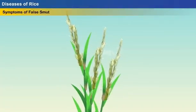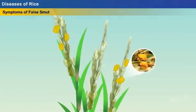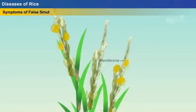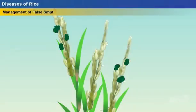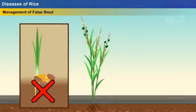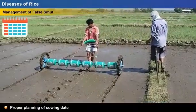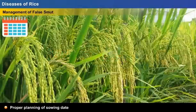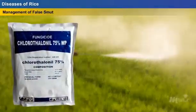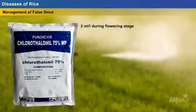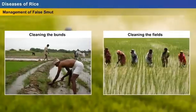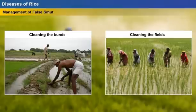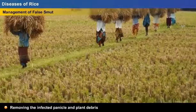Symptoms of false smut: initially, the smut ball is yellow in colour and coated by a membrane. After bursting of the membrane, the colour changes to yellowish green, then olive green, and at the end turns greenish black. False smut can be managed by avoiding the sowing of infected seeds, by proper planning of sowing date to avoid damage during the heading period, by spraying chlorothalonil 75WP at the rate of 2 ml per litre during flowering stage, by cleaning the bunds and fields regularly to avoid disease transmission through weeds, and by removing infected panicles and plant debris after harvesting.